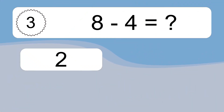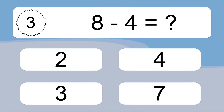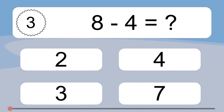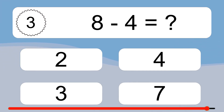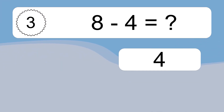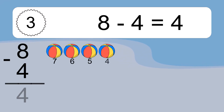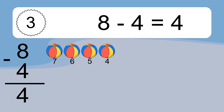8 minus 4 equals what? 8 minus 4 equals 4. Let's count it: 7, 6, 5, 4.